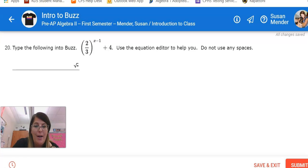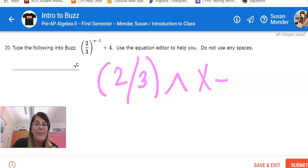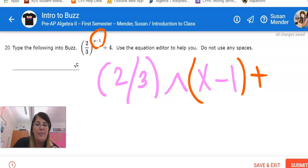So in order to type this into Buzz, I'm going to have to put the parentheses 2 divided by 3. I'm going to use a caret button to the power, but if I just type in x minus 1, it's not going to give me the whole thing. It's going to be only to the power of x and then minus 1. That thing needs to be in parentheses.